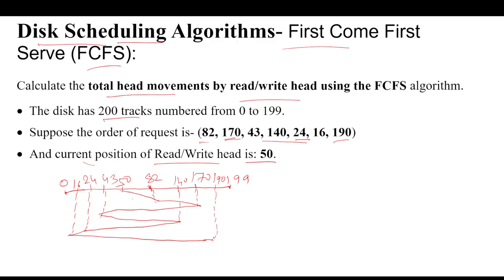The read/write head is moving through these particular requests. Based on this, we have to calculate the total number. Our current position was 50. From 50 we visited 82, that means 82 minus 50. From 82 we visited 170, so 170 minus 82.